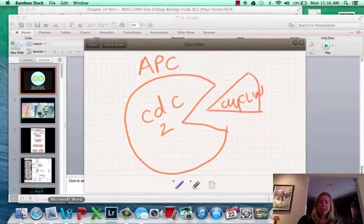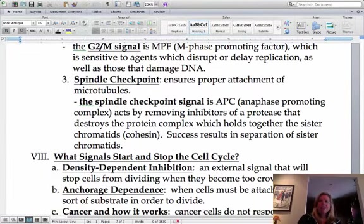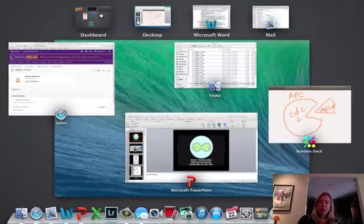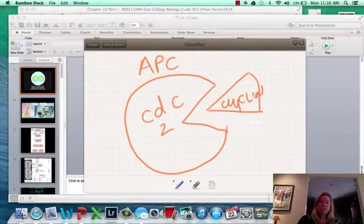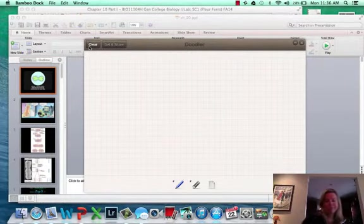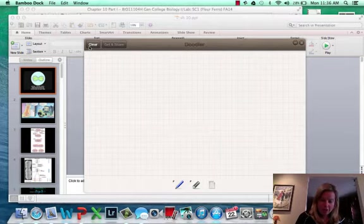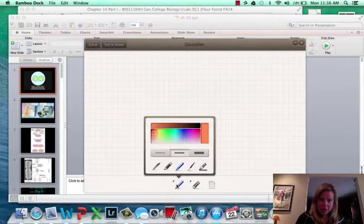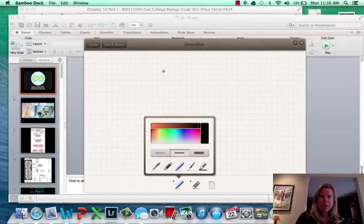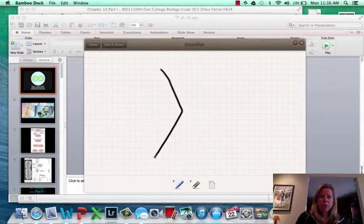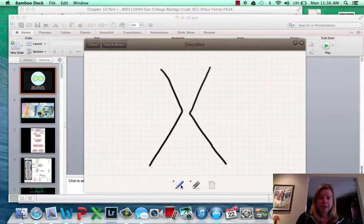However, we need to look at some wordiness in my notes here. So what anaphase promoting complex is, is it's going to remove inhibitors of a protease that destroys the protein complex holding sister chromatids together. Oh, my God, that's a lot of words. So let's just commit to this, and I'll show you what I'm talking about. So you've got your one chromosome here, and you have the other one here. These are your sister chromatids.